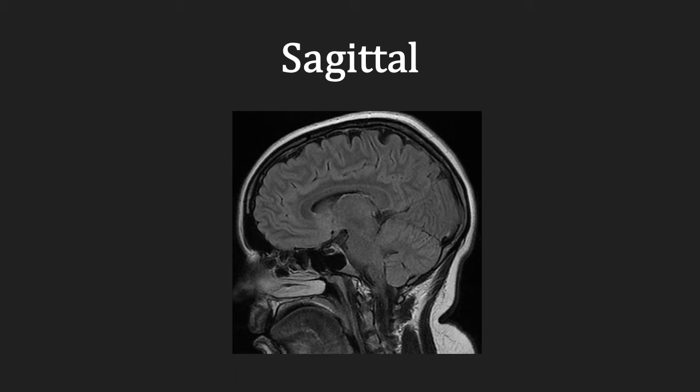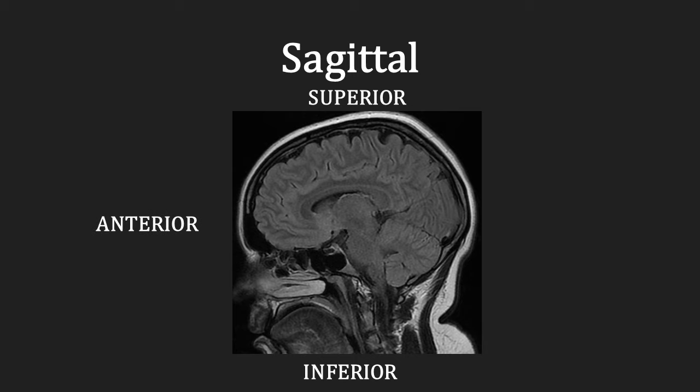And finally in the sagittal plane, the superior or top of the head is at the top of the image, the inferior or the neck is at the bottom, whilst the anterior or the face is at the left of the image, and the back of the head or posterior is at the right of the image.